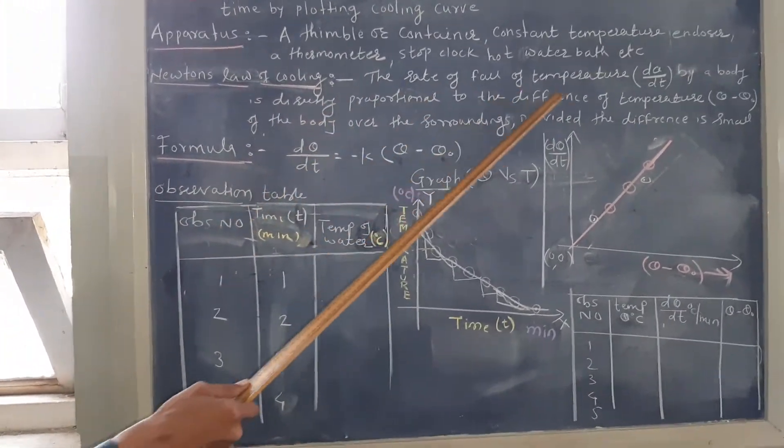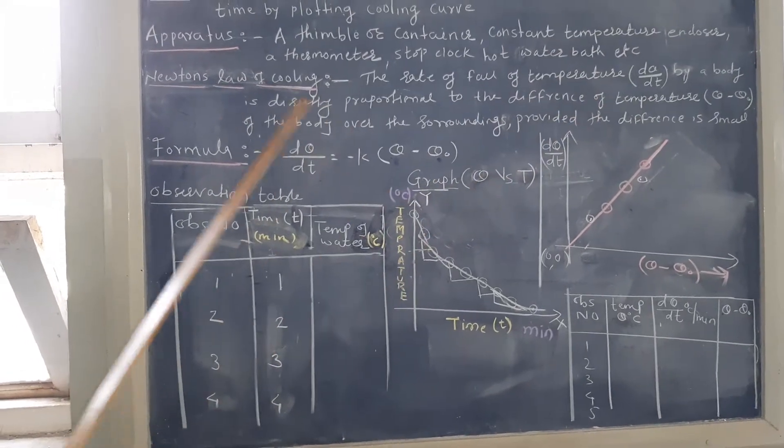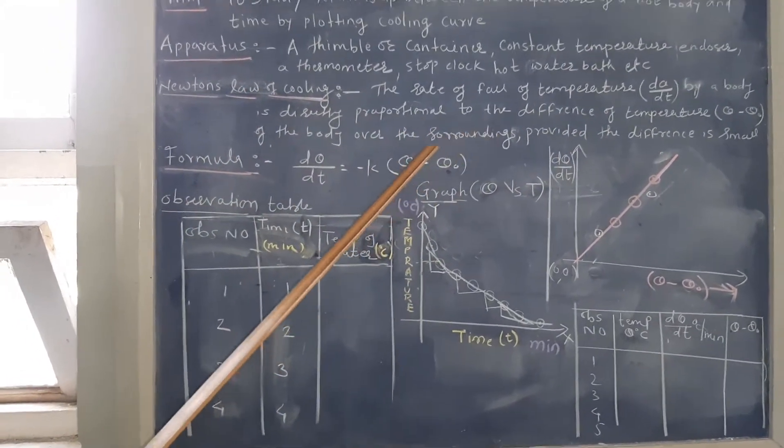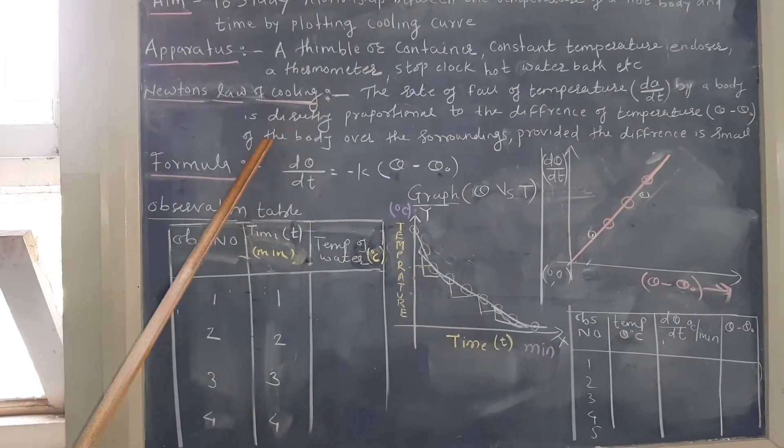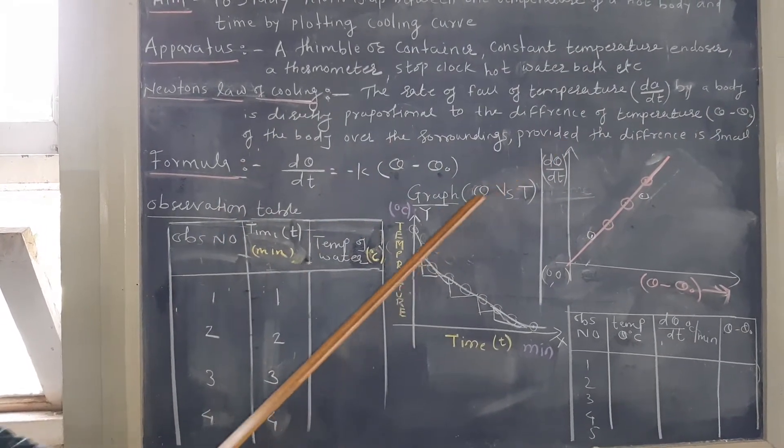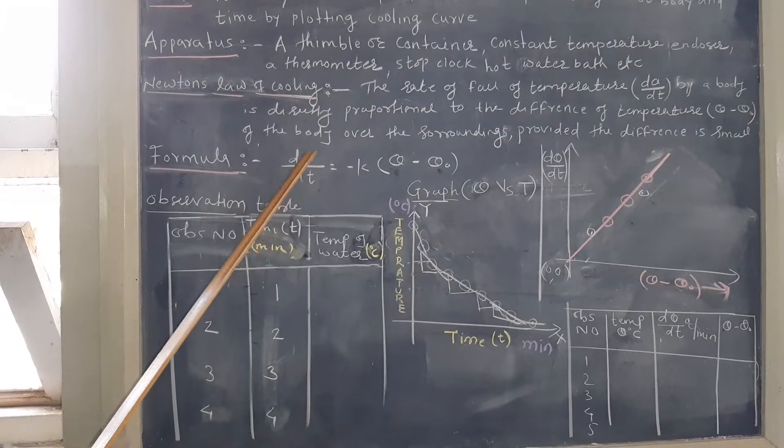Newton's law of cooling: the rate of fall of temperature dθ/dt by a body is directly proportional to the difference of temperature (θ - θ₀) of the body over the surrounding, provided the difference is small.